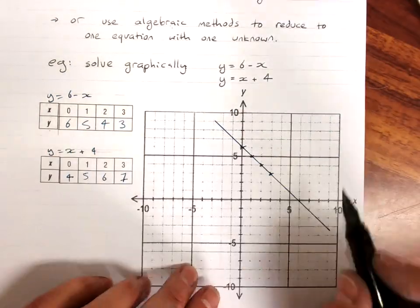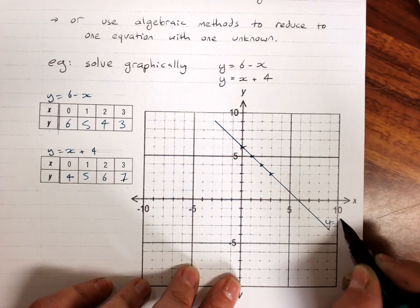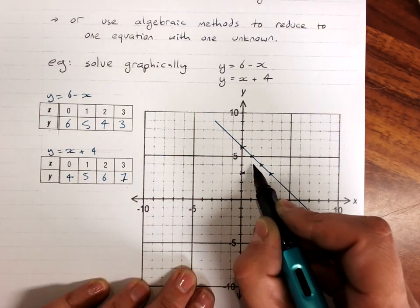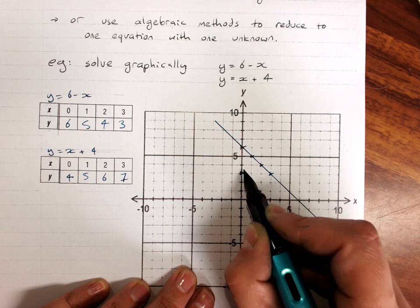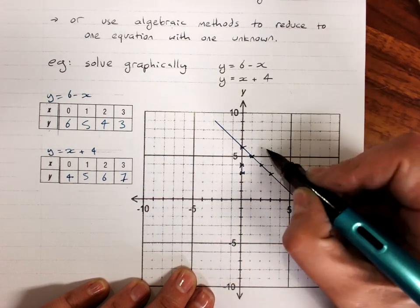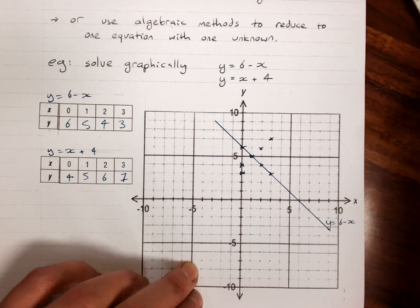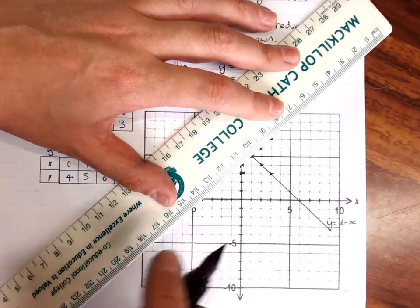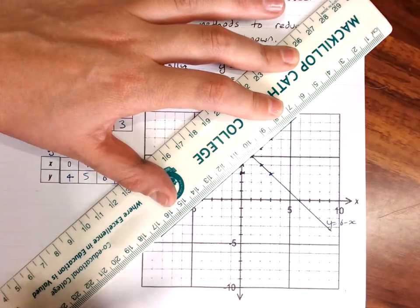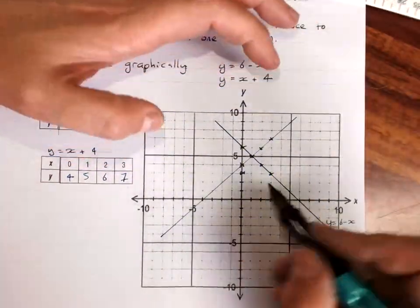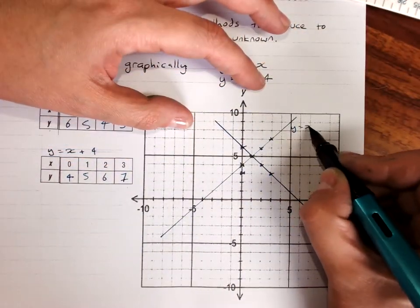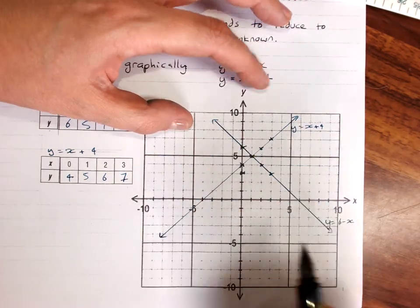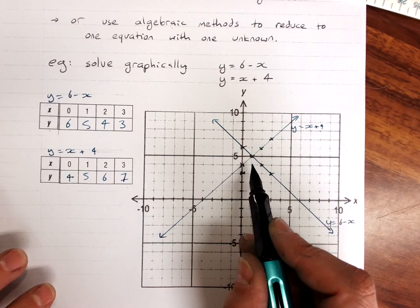Graph the first line. Label it. Graph your second line. Correctly. Label that. And find the point where they intersect.